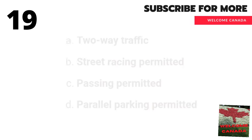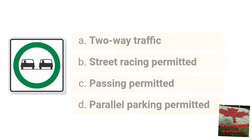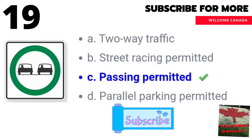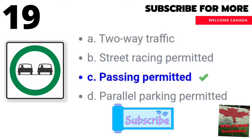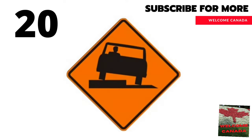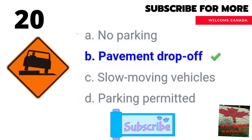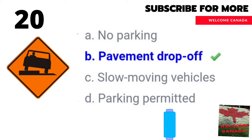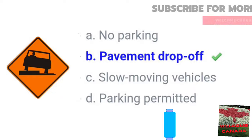The nineteenth traffic sign — choose from the options. The right answer is C: passing permitted. Now the twentieth traffic sign — look at the screen. The right answer is B: pavement drop-off.